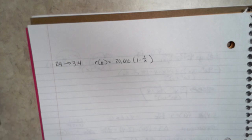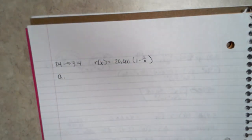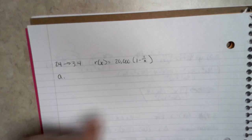So with part A, find the marginal revenue when 100 machines are produced. The first thing I did was take the derivative of this function.